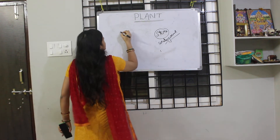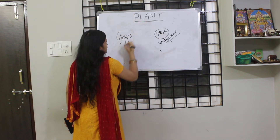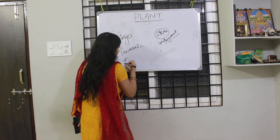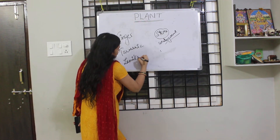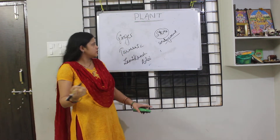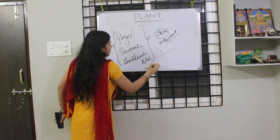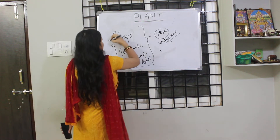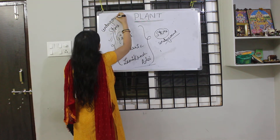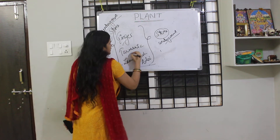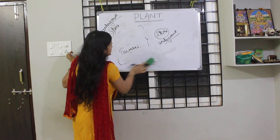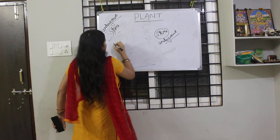We eat ginger, we eat turmeric, we eat jimikand, we eat arbi — you know what these are. All of us know we get these from underground, but are they roots or stems? They are stems — underground stems. Ginger, turmeric, jimikand, arbi — we get them from underground, and they are underground stems.